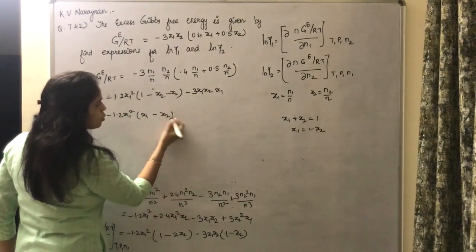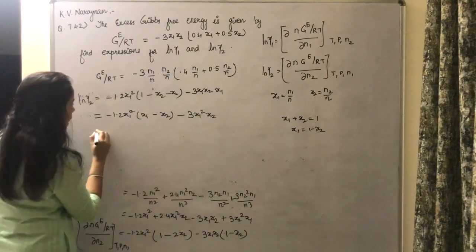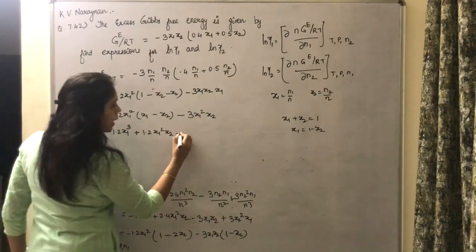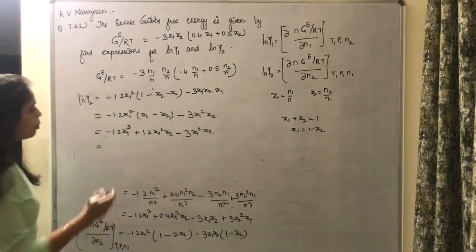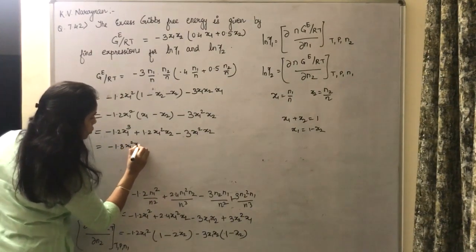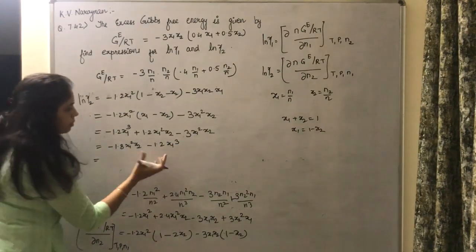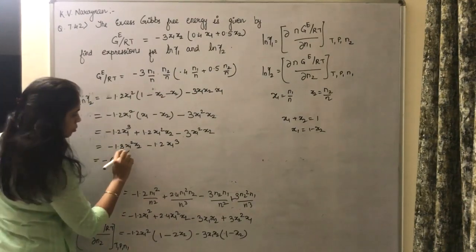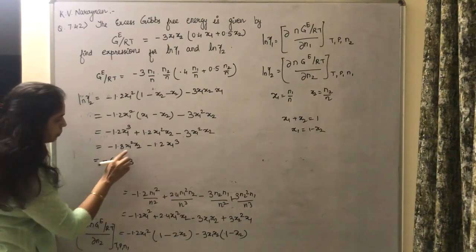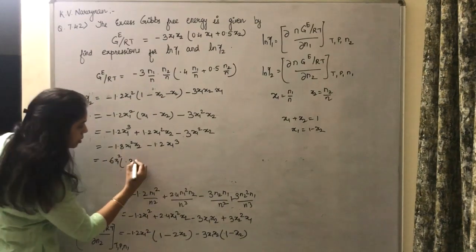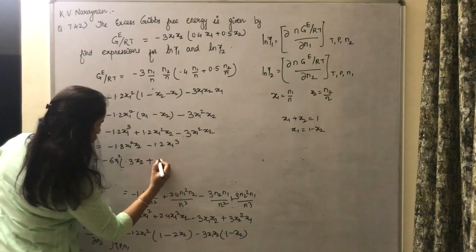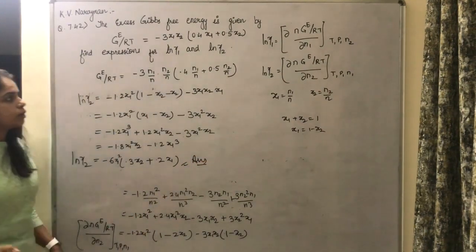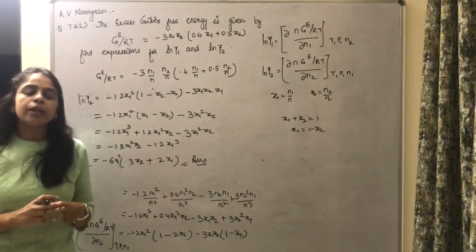Continuing simplification: minus 1.2·x₁²·(x₁ minus x₂) minus 3·x₁²·x₂. Opening the bracket: minus 1.2·x₁³ plus 1.2·x₁²·x₂ minus 3·x₁²·x₂ = minus 1.8·x₁²·x₂ minus 1.2·x₁³. Taking minus 6·x₁² common — wait, taking x₁² common: minus x₁²·(1.8·x₂ + 1.2·x₁). Factoring out 6: this equals minus 6·x₁²·(0.3·x₂ + 0.2·x₁). This is ln γ₂. These are the two relationships for ln γ₁ and ln γ₂, and in a similar way you can solve many such questions. Hopefully after watching this you will be able to solve such types of questions. Thank you.